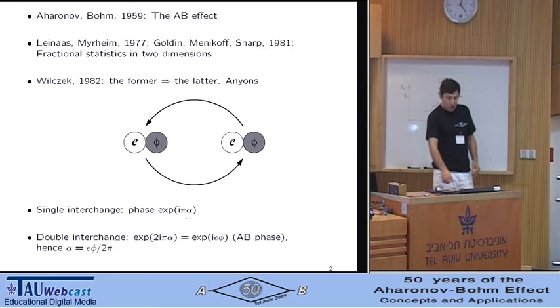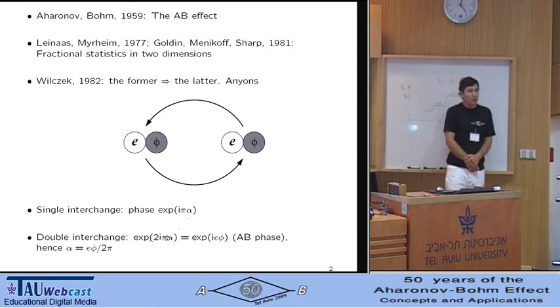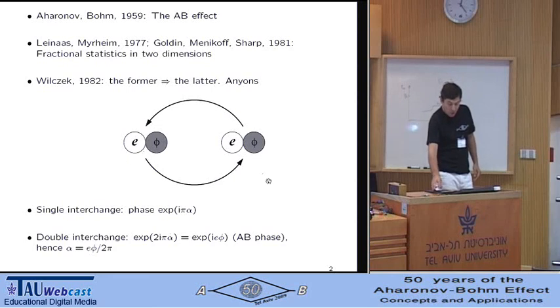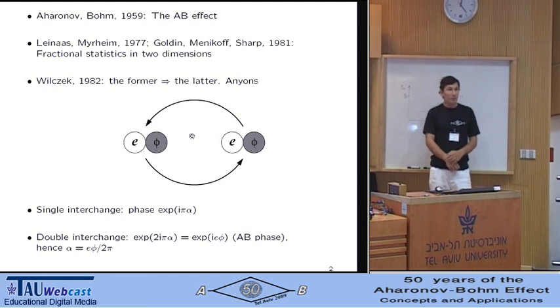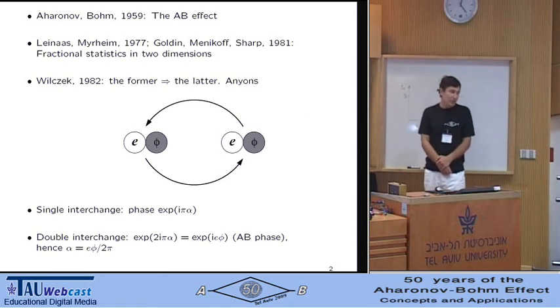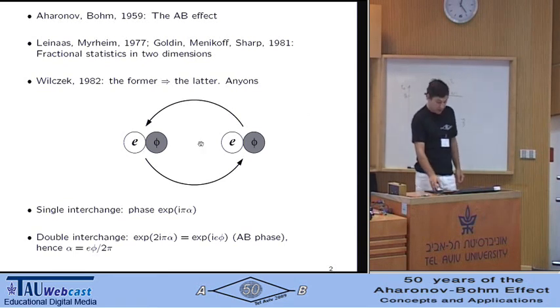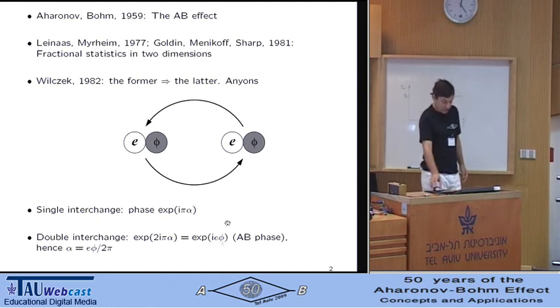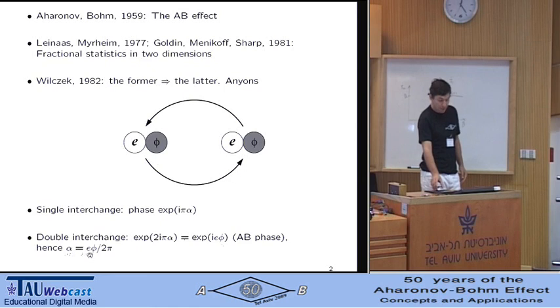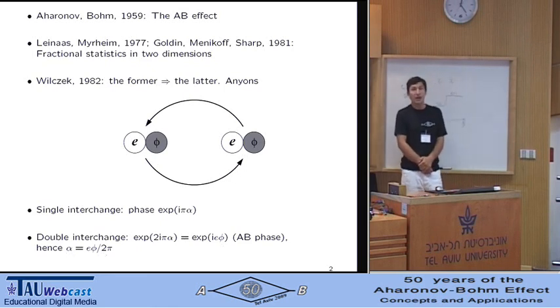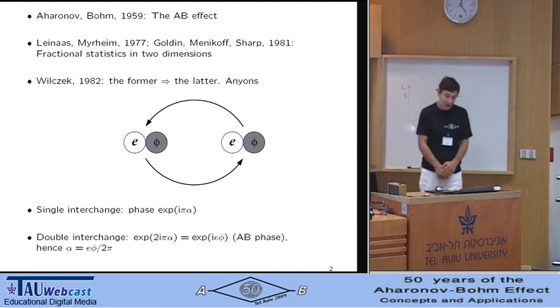Now, a double interchange yields twice the phase, but on the other hand, it is topologically equivalent to pulling one particle all the way around the other one in a circle. Enter the Aharonov-Bohm effect. This phase is nothing but the product of charge and flux, and therefore, we have the expression for alpha, which is the same product divided by 2π, and the particles do acquire fractional statistics. They turn into what Wilczek called anyons.